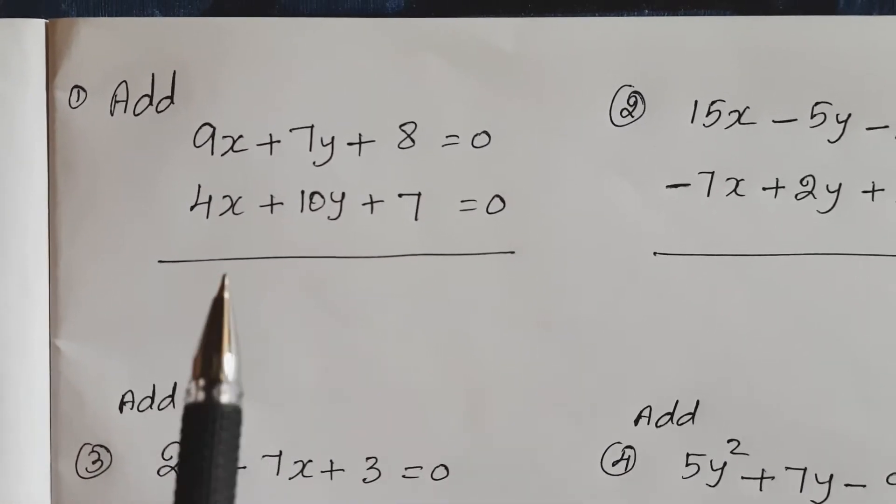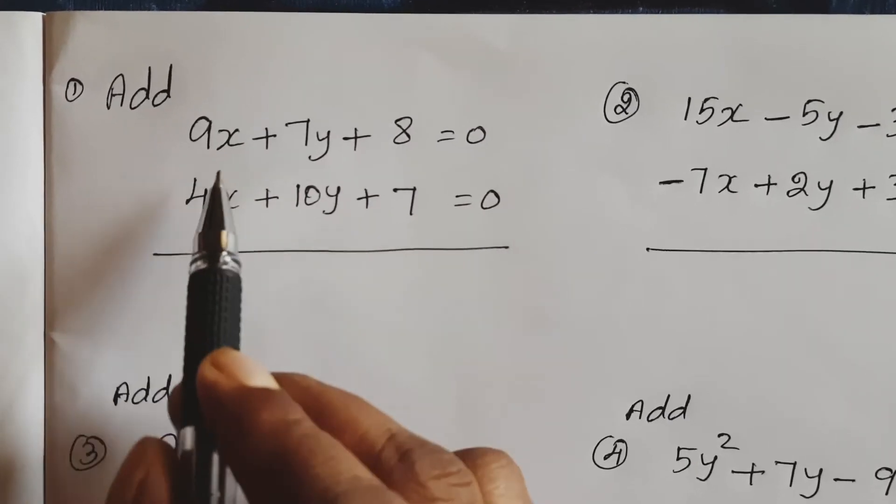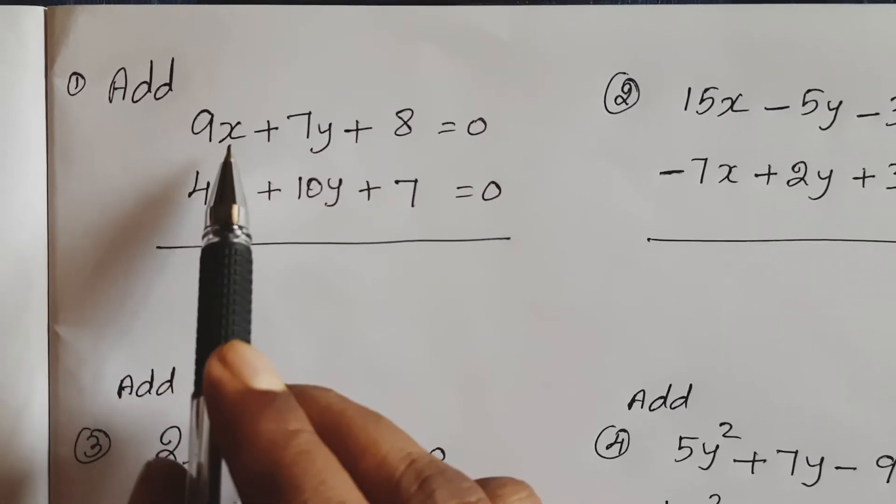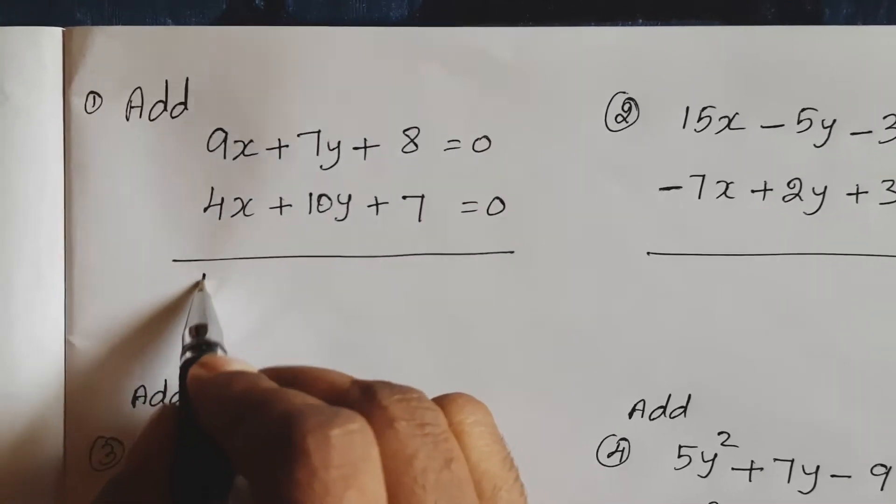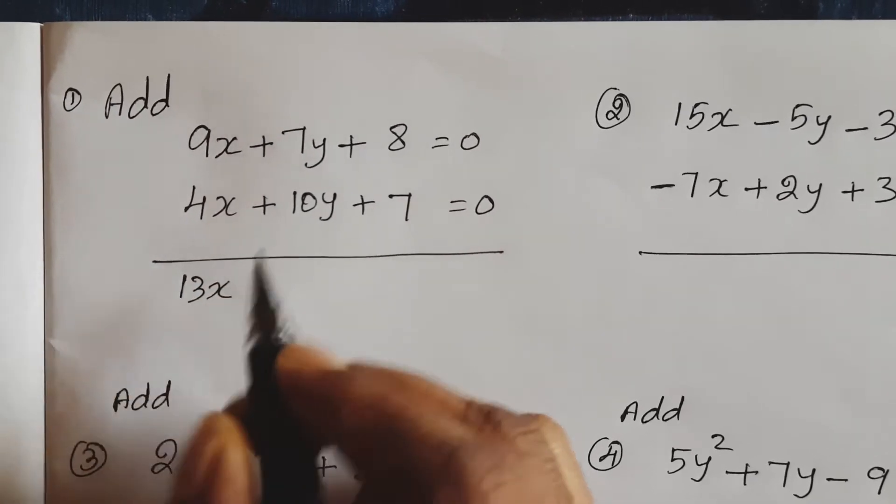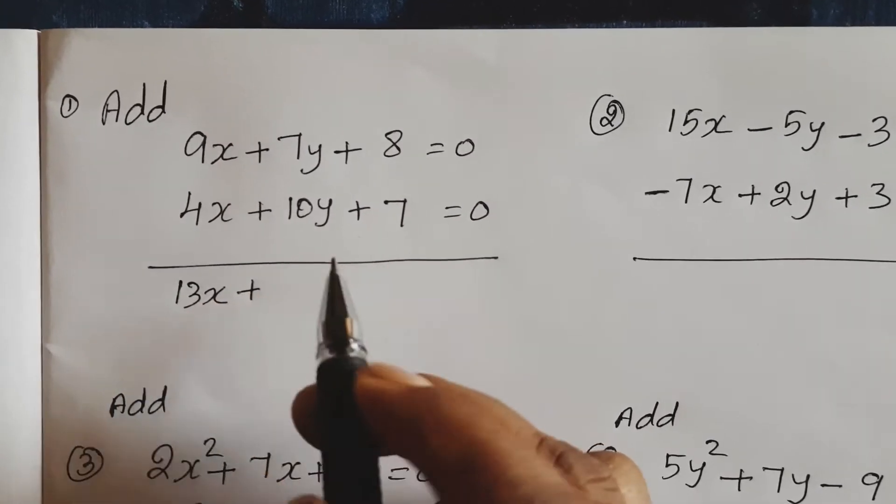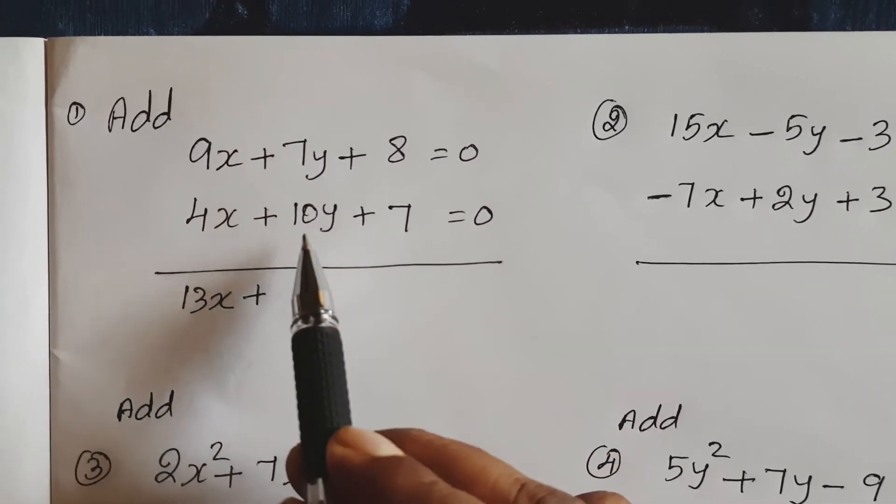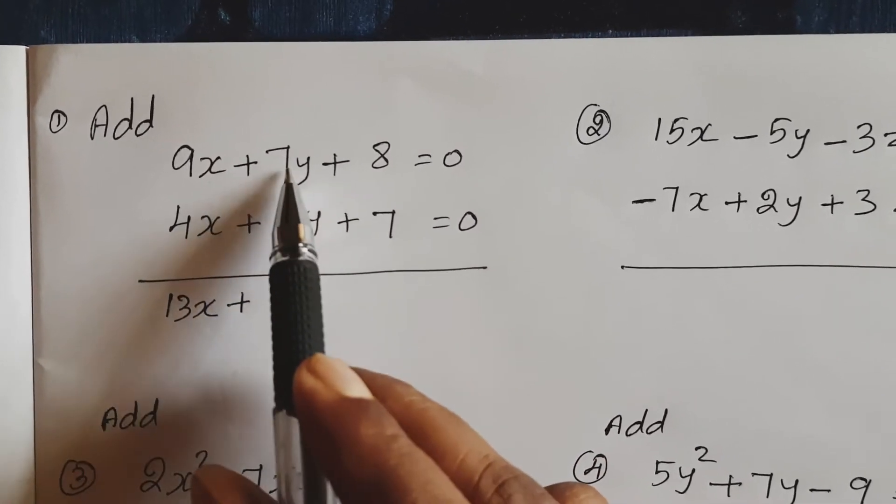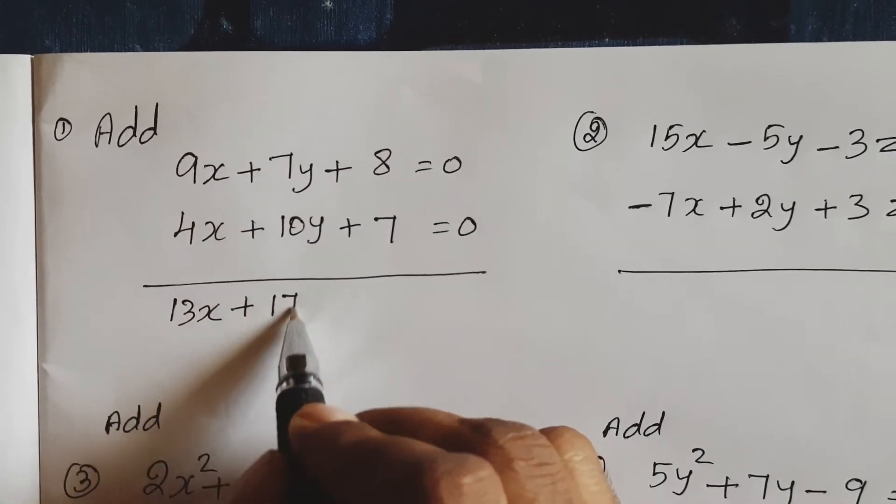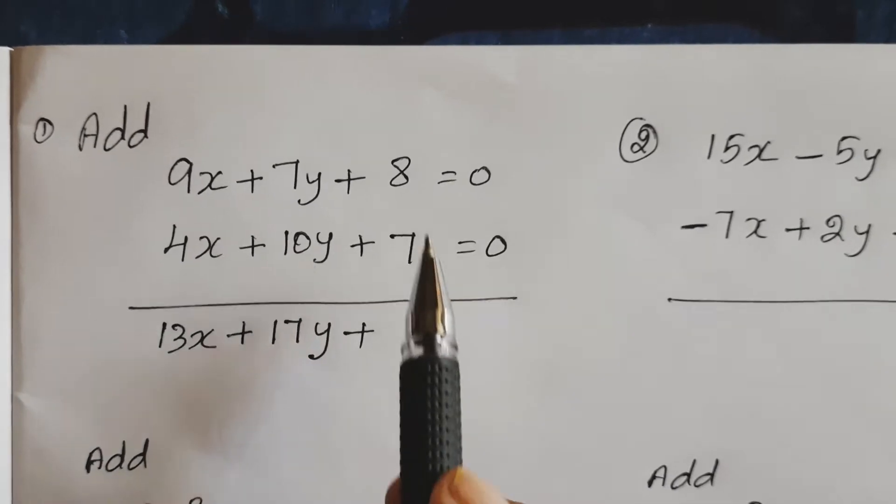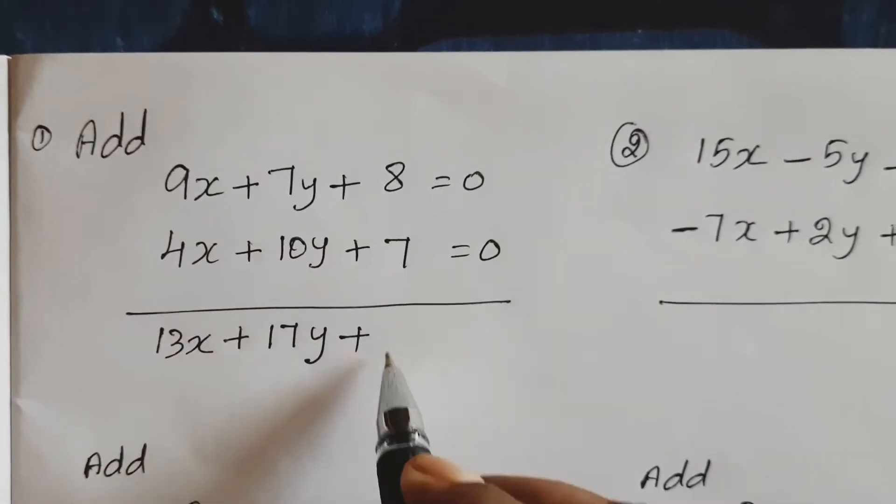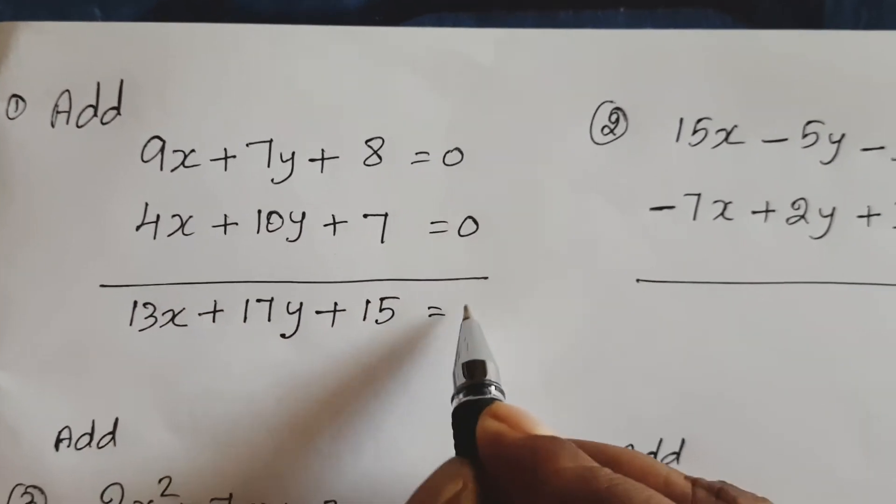Let's start with the first equation: 9x + 4x plus 7y plus 10y. So 7 plus 10, 17y, plus 8 plus 7, 15 equal to 0.